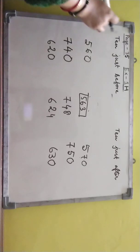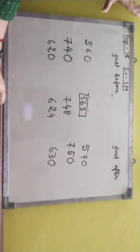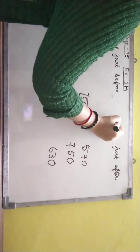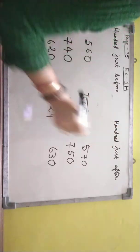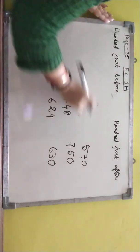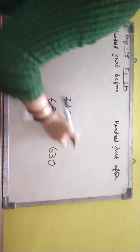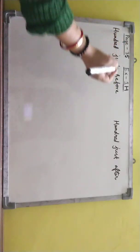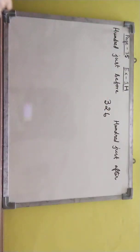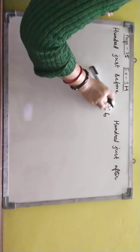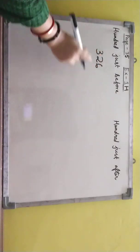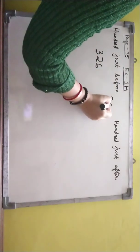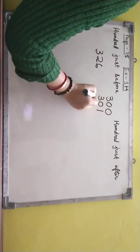Now we will be doing hundred just before and hundred just after. Suppose three hundred twenty-six. This is the number. I will be writing here 326. So ones tens hundreds. From where it will start? From 300 it will start. 300, 301, 302.